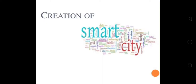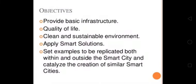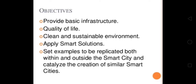Another concept introduced by the Government of India is the creation of smart cities. A smart city has three components: basic infrastructure, smart solutions to make infrastructure and services better, and area-based development. The objectives of a smart city are to provide basic infrastructure, quality of life, clean and sustainable development, apply smart solutions, set examples to be replicated within and outside the smart city, and catalyze the creation of similar smart cities.